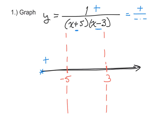Now move to the next interval — pick a number between negative 5 and 3, like 0. If x is 0, the numerator 1 is still positive. 0 plus 5 is positive, and 0 minus 3 is negative. So the fraction is positive divided by positive times negative. Since we have an odd number of negatives, the fraction is negative, and all numbers on this interval will be negative.